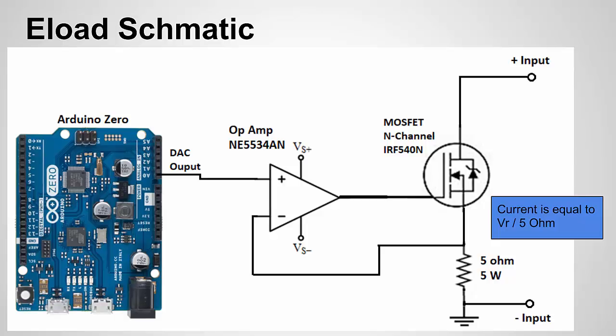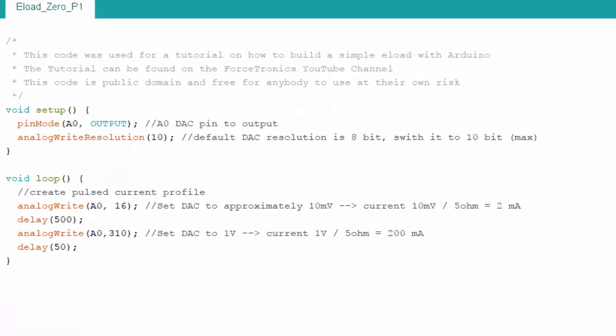Let's look at some code with the Arduino Zero. Here's the simple Arduino code and in part two we'll actually get into more advanced code. This is just to show the theory of operation. In setup I set pin zero which is the DAC pin on the Arduino Zero to an output. By default it is set for eight bits of resolution on the DAC so I use analog write resolution setting to change it to 10 so that's its highest resolution. If I leave it at 8 bit I can only set 255 different points. If it's at 10 bit I could set 1024 points.